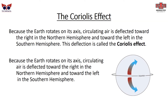You may have heard of the Coriolis effect. This happens because the Earth is rotating — the Earth is moving underneath the air, and the air is trying to keep up with it. As a result, circulating air is deflected toward the right in the northern hemisphere and toward the left in the southern hemisphere. This is called the Coriolis effect, and because the Earth always rotates in the same direction, it consistently follows this pattern.